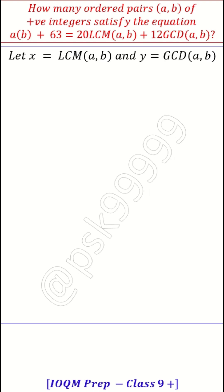So let us call LCM equal to x and GCD as y, then ab = xy, product of those two numbers is LCM into GCD. Now, you make the equation, rewrite the equation. AB I am writing it as xy and taking all the terms to one side, I get xy - 20x - 12y + 63 = 0.